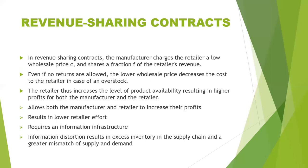The retailer increases the level of product availability, resulting in higher profit for both the manufacturer and the retailer. It allows both parties to increase their profits but results in lower retailer effort. It requires an information infrastructure, and information distortion results in excess inventory in the supply chain and a greater mismatch of supply and demand.